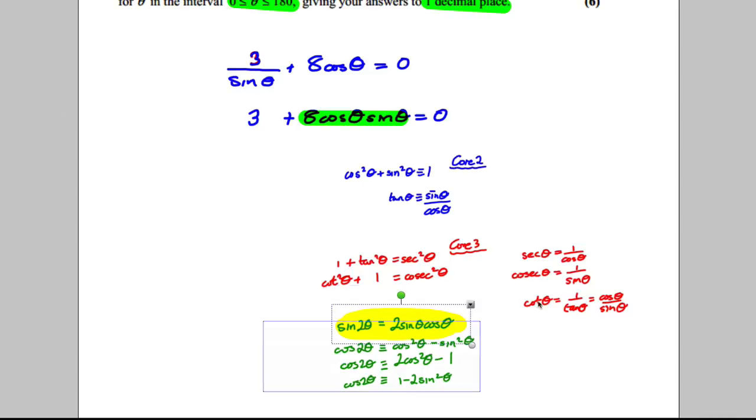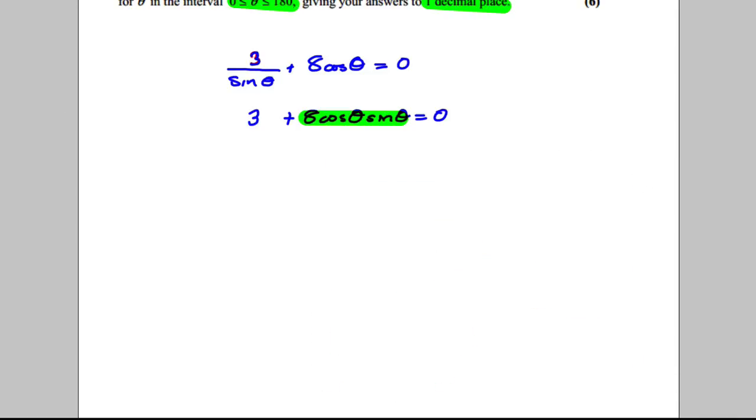So what I'm going to do is I'm going to take this away and I'm going to say that I'm using the following identity: sine 2θ is 2 sine θ cosine θ. So using that and multiplying both sides by 4, you would see that 4 sine 2θ would be equal to 8 sine θ cosine θ.